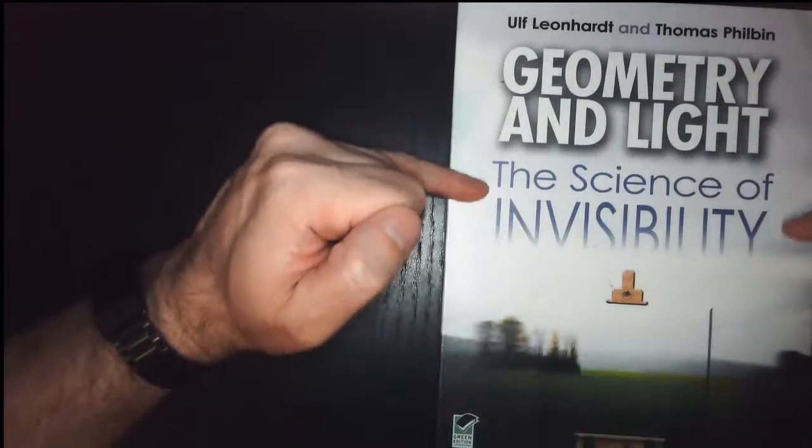Hello, today I'd like to talk about Leonhardt and Philbin's Geometry and Light, the Science of Invisibility. So this is really a textbook. It's a textbook in the ways of curved light.